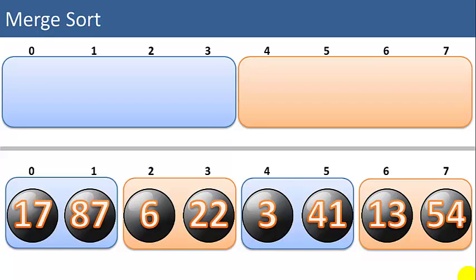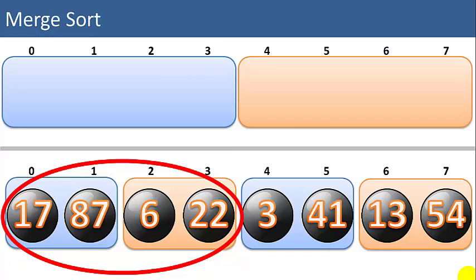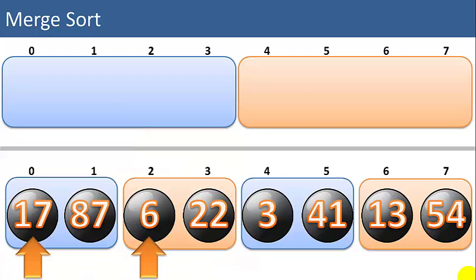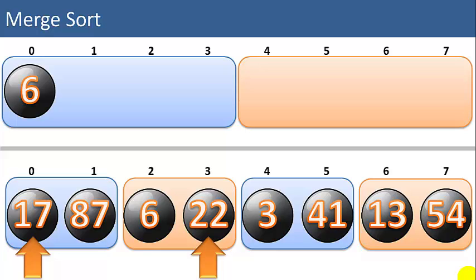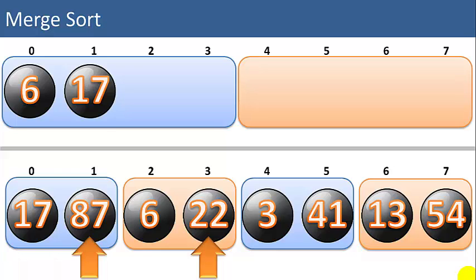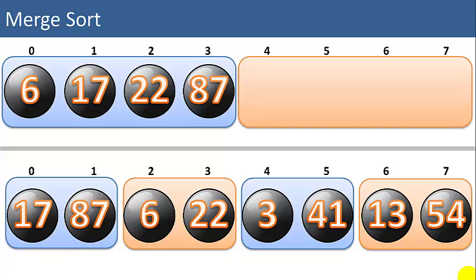We're going to merge these 4 lists of 2 items each into 2 lists of 4 items each. We'll start with 17, 87 and 6, 22 — two sorted lists of 2 items — and move them into one list of 4 items in sorted order. We compare 6 to 17 — 6 is smaller, so we place that up and move the pointer to 22. We compare 17 to 22 — 17 is smaller, so we move that up and shift the pointer to 87. We compare 22 to 87 — 22 is smaller. Then we copy up the remaining item from the left list: 87. So the left list on top is now in sorted order.